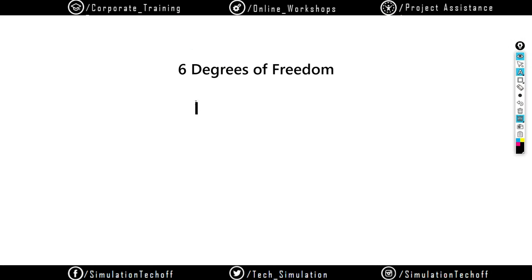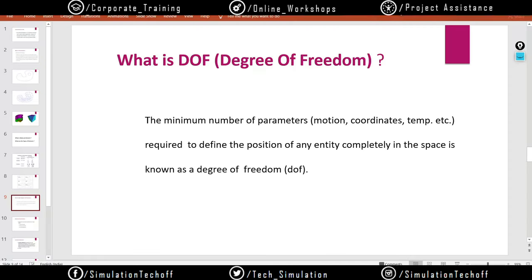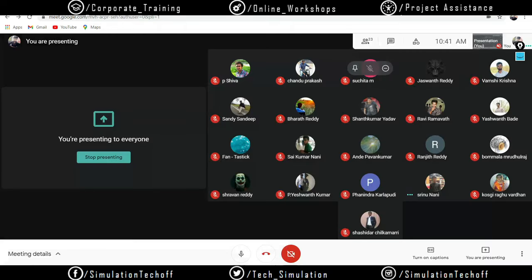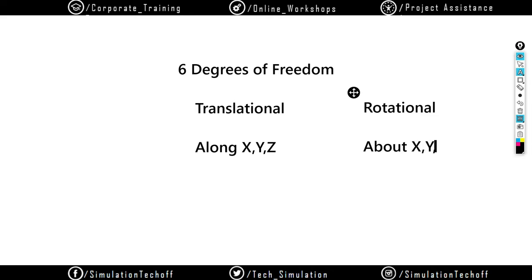In the six degrees of freedom, the first three are translational: translation along X, translation along Y, and translation along Z. The other three are rotational: rotation about the X-axis, rotation about the Y-axis, and rotation about the Z-axis.